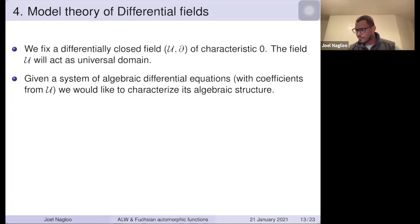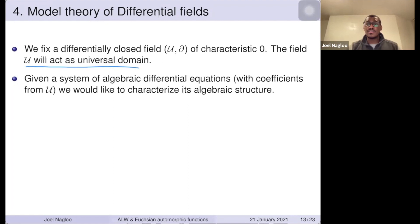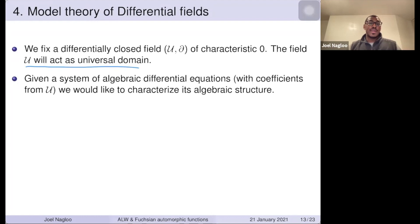I fix a differentially closed field of characteristic zero — U — that acts as a universal domain. When I think of points, solution sets, and varieties, they all live in U or a Cartesian power of U. Given a system of algebraic differential equations, we want to look at the solutions and derivatives, and figure out algebraic dependencies — to characterize whether there is any algebraic structure. This is not a crazy question: for example, the constants form an algebraically closed field, and the Weierstrass equation gives an algebraic group structure to an elliptic curve.